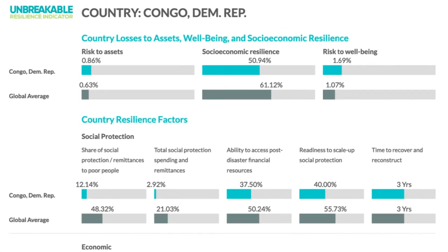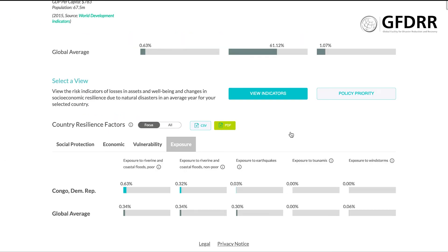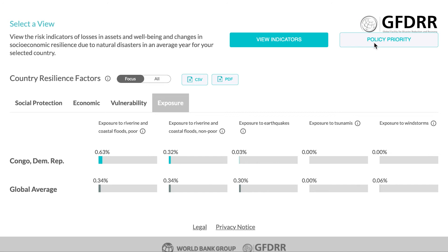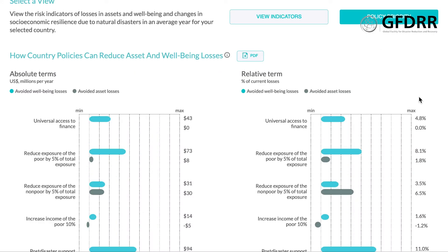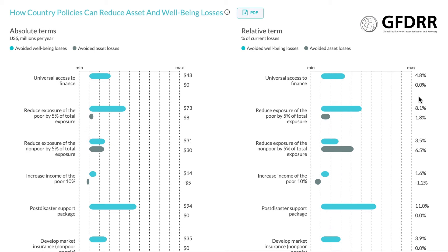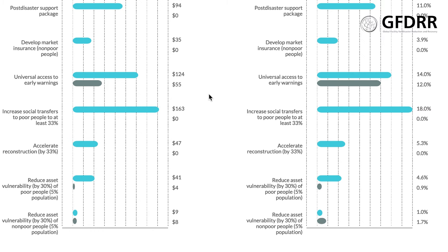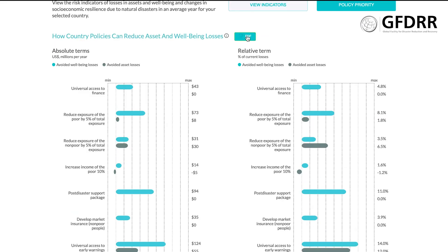You can export these results by clicking on the PDF link. You can also download all of this data from all countries currently covered in the model by clicking on the CSV link. Let's switch to the Policy Priority View to explore what pre-selected policy options would strengthen resilience in DRC. Figures include the values of avoided losses in assets and well-being in millions of USD per year, reported in both absolute terms and in relation to GDP. Here you can see that improving access to early warning would be an effective policy option, resulting in both huge avoided asset and well-being losses. This policy priority list can be exported by clicking on the PDF link.